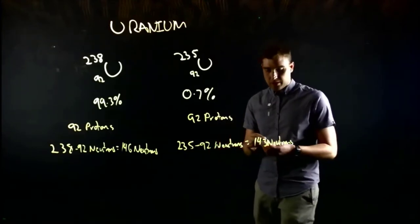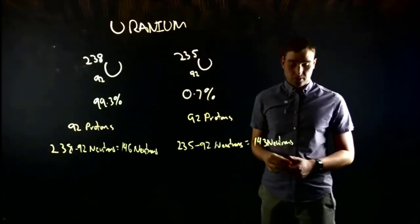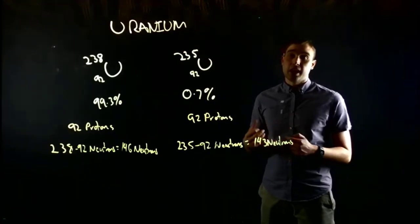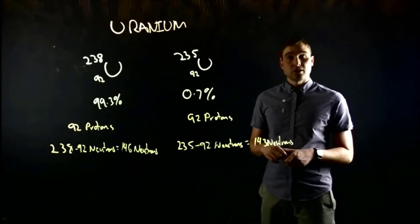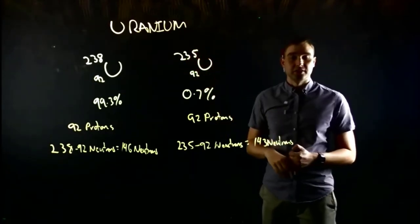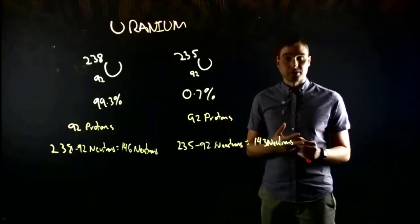So when you dig uranium out of the ground, most of it is 238, a very small proportion is 235. But this isn't useful if you want to use uranium in a nuclear power station or in a bomb. So you want to make more of the more radioactive substance because that's more likely to do the nuclear reactions required for your power station or your bomb to work.